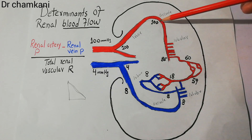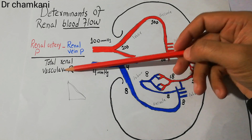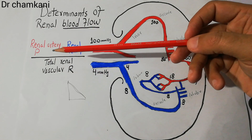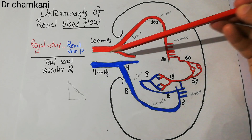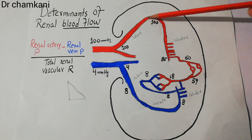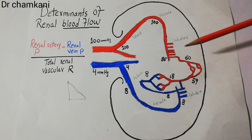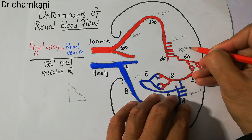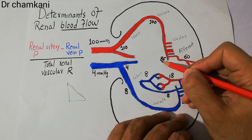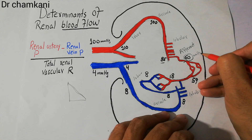We are calculating the decrease in pressure at each point to determine the total renal vascular resistance, which then lets us calculate flow. The first significant pressure decrease occurs at the level of the interlobular arteries — at the end of the interlobular artery the pressure drops to around 85 mmHg. From the lobular arteries arise the afferent arterioles, and at the start of the afferent arteriole the pressure is around 85 mmHg, but at the end it is 60 mmHg.